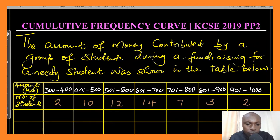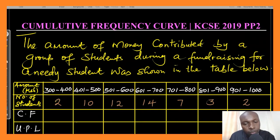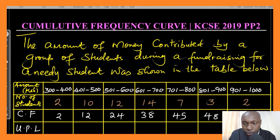I have a table with spaces to fill in: one part for cumulative frequency and another for upper class limits. For the cumulative frequency: 2 plus 10 gives 12, 12 plus 12 gives 24, 24 plus 14 gives 38, 38 plus 7 gives 45, 45 plus 3 gives 48, and 48 plus 2 gives 50.